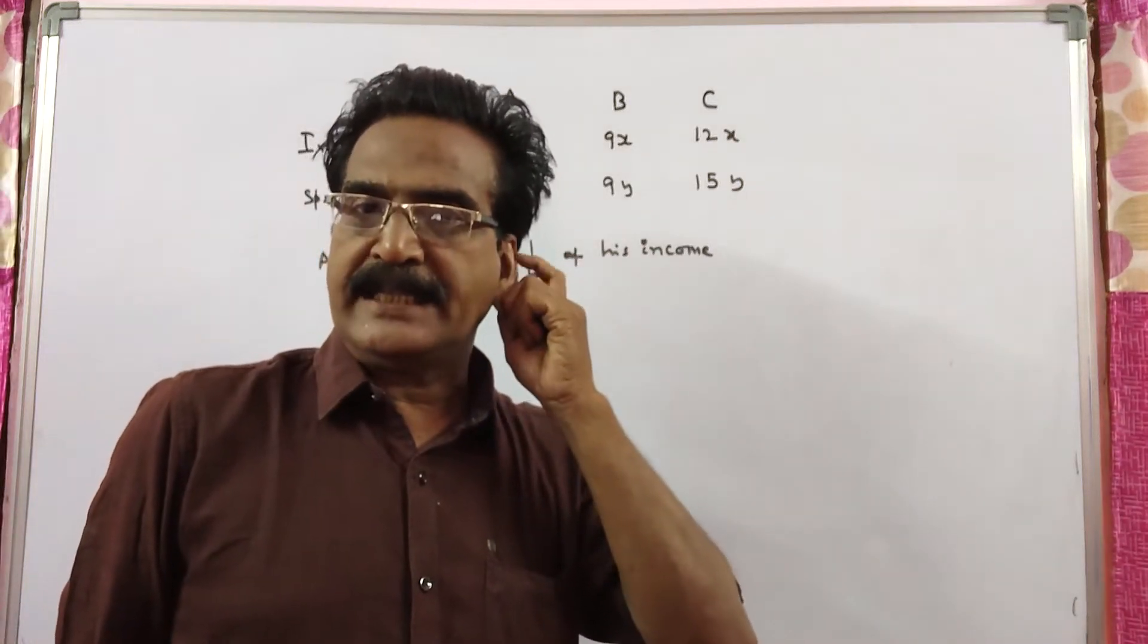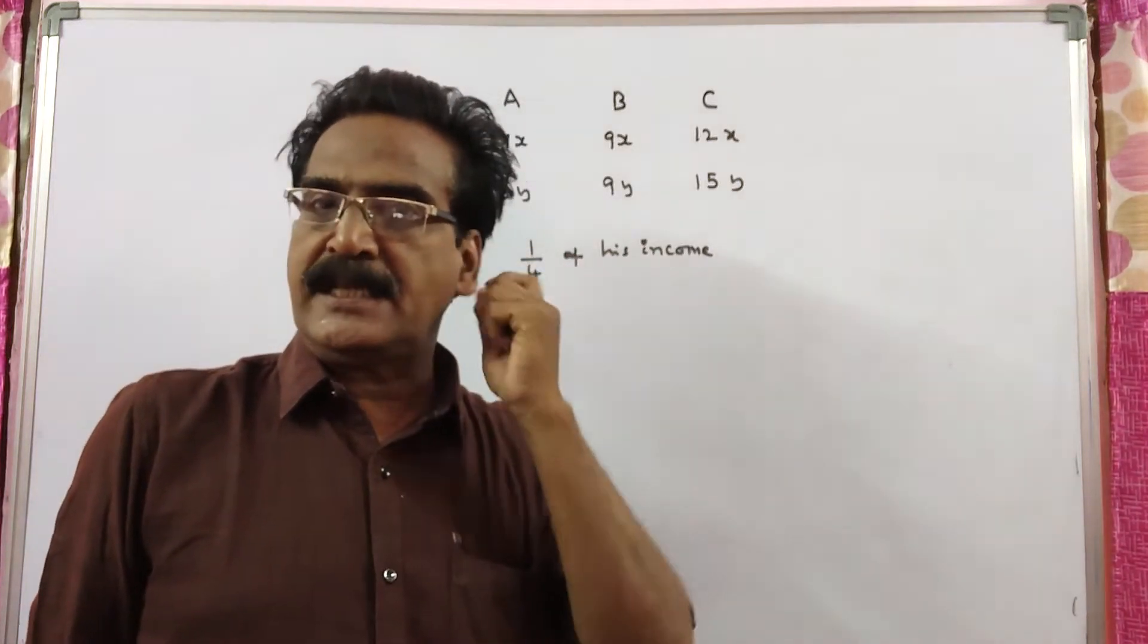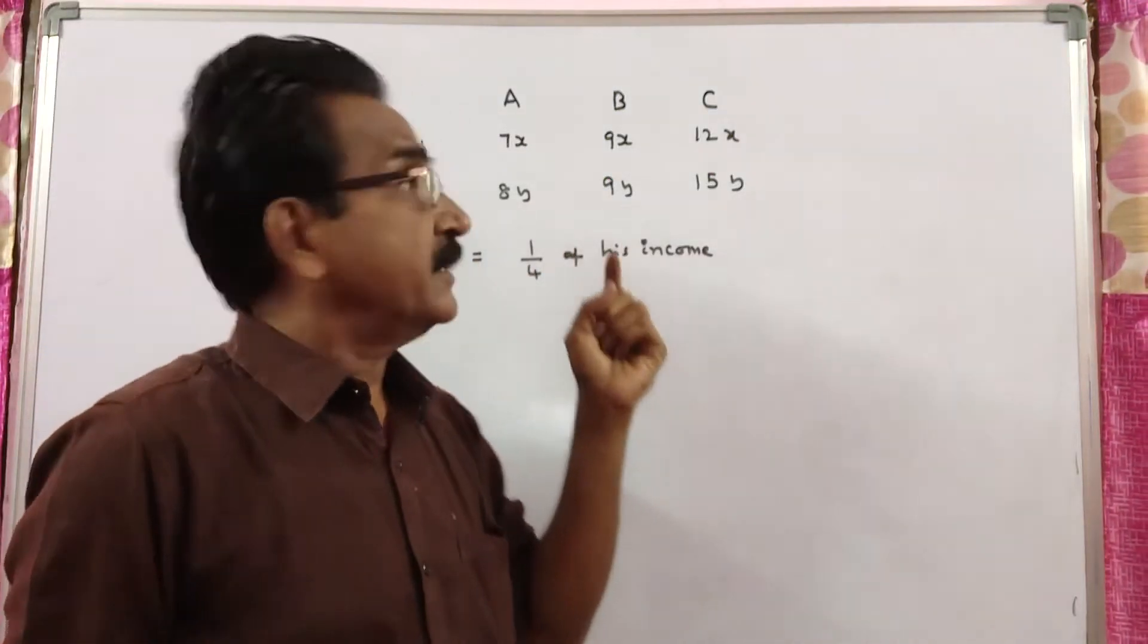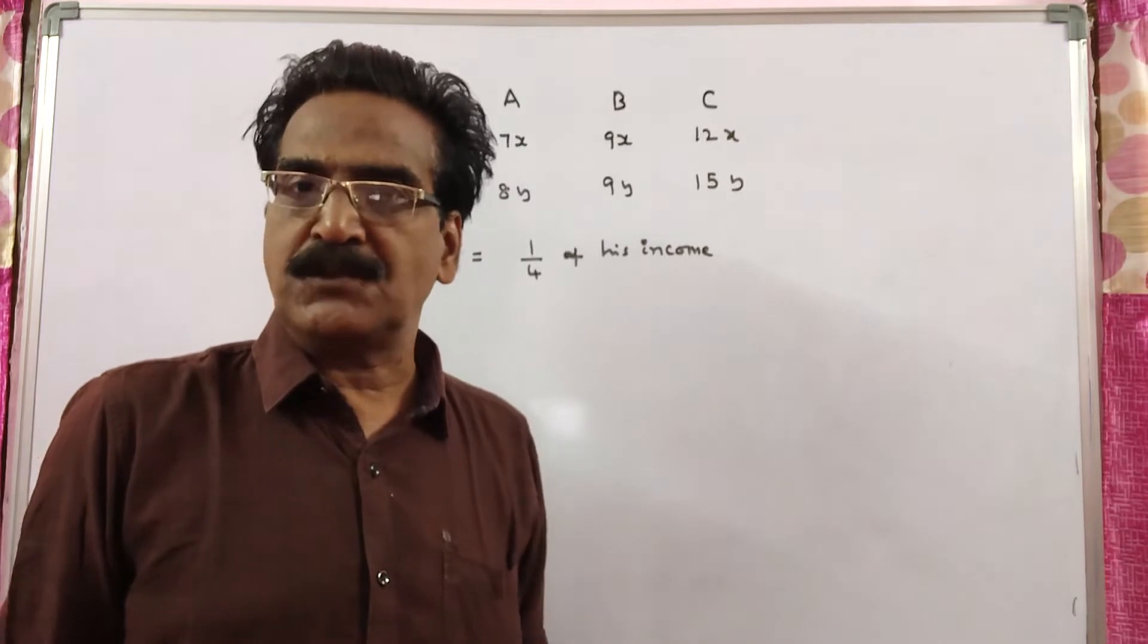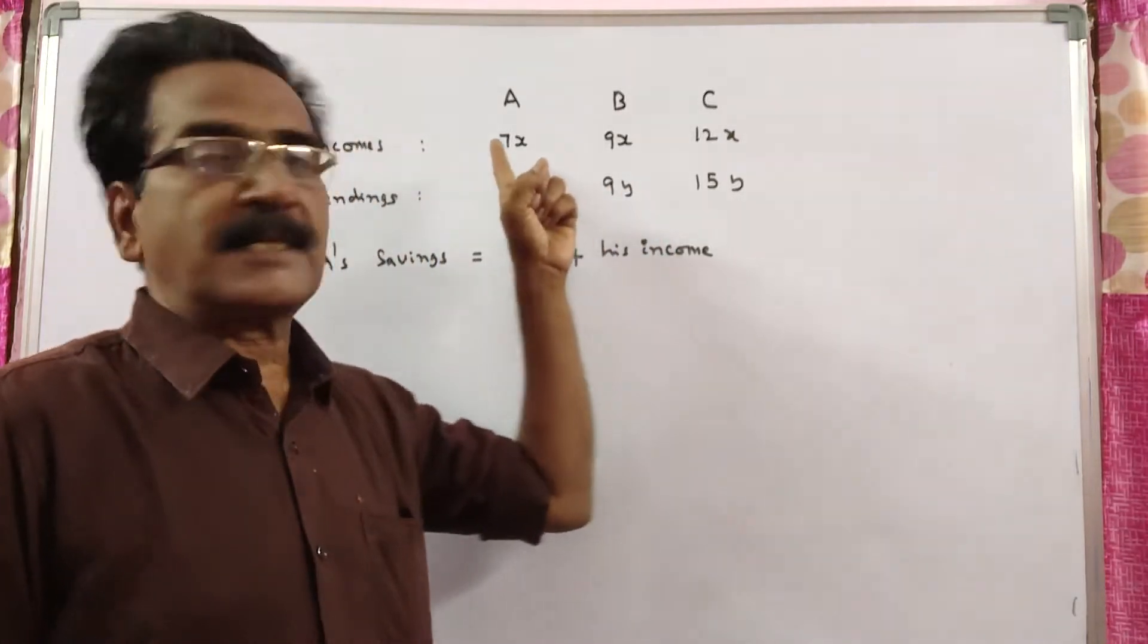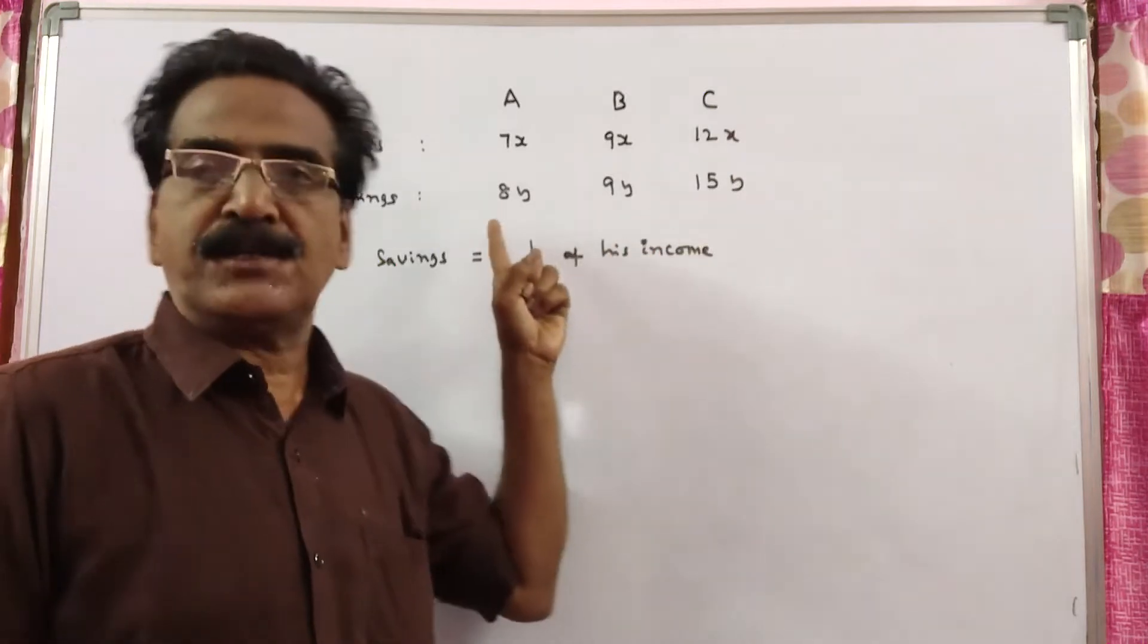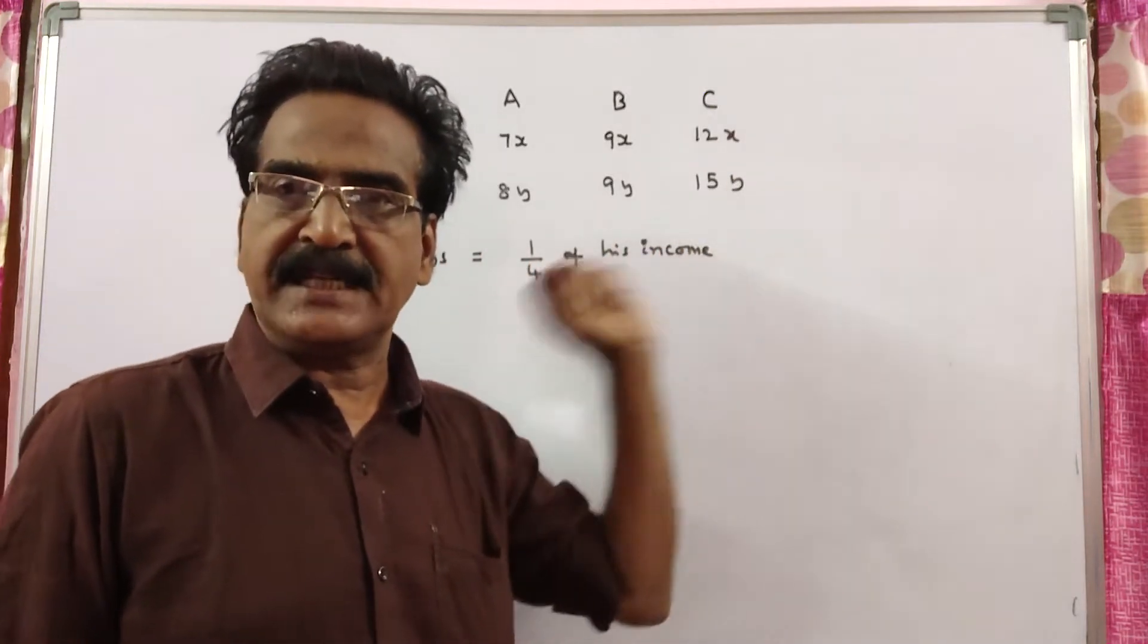Hi friends, good morning. Please look at the next problem in ratio and proportion. See friends, the incomes of A, B, C are in the ratio 7 is to 9 is to 12. That means their incomes are 7x, 9x and 12x.